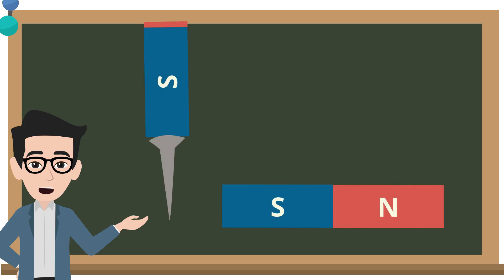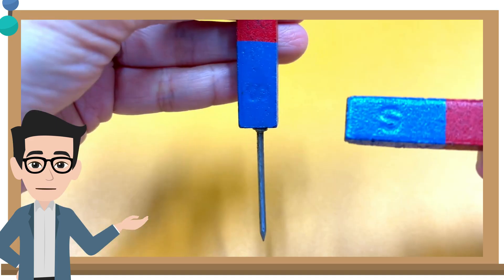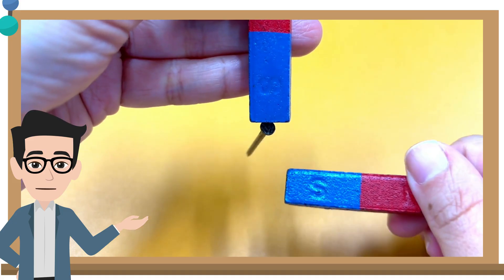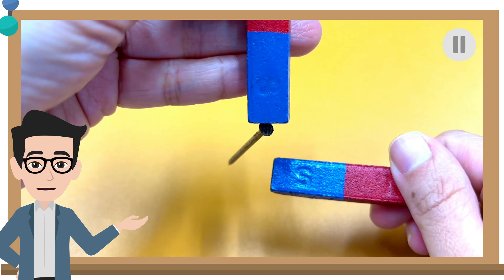What if we bring the other end of the bar magnet near the iron nail instead? Observe what happens. Pause and discuss.